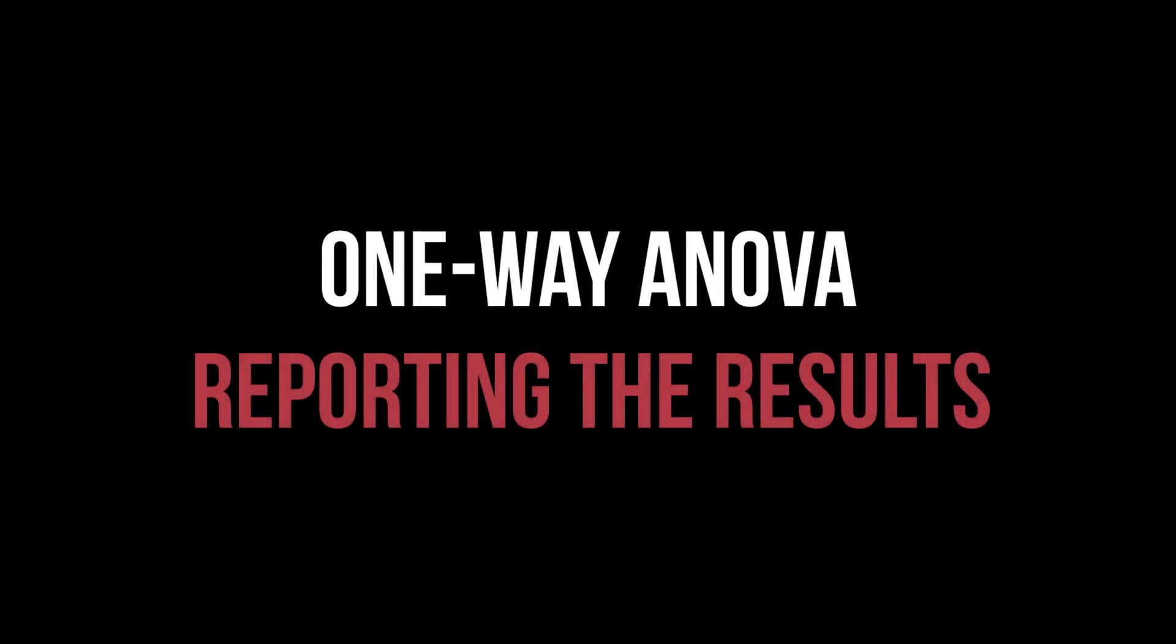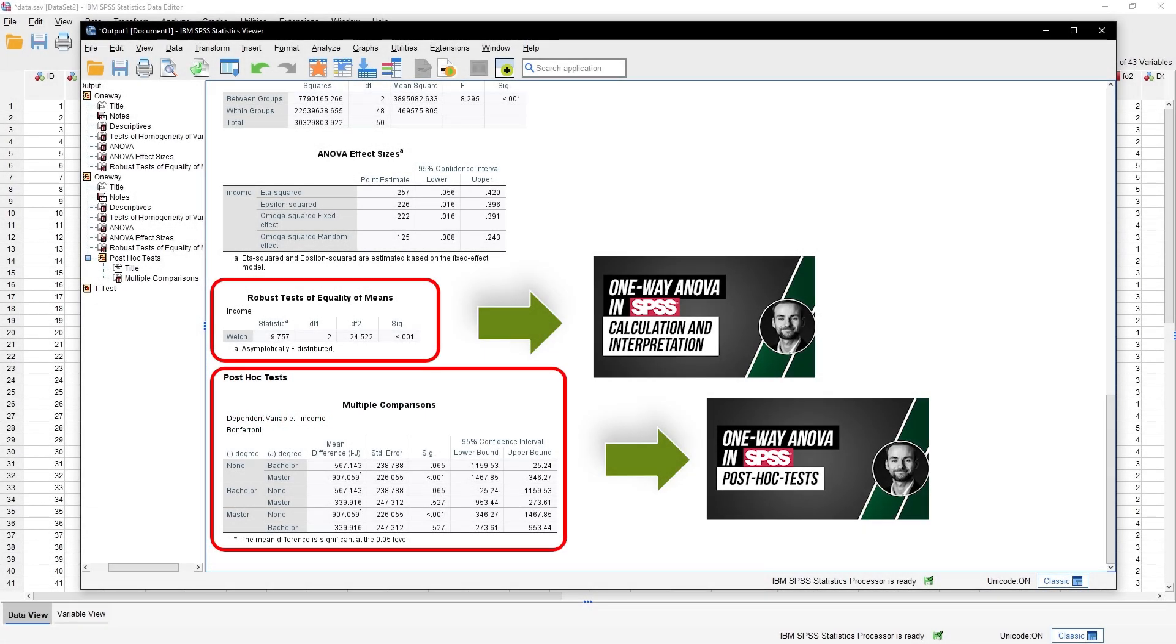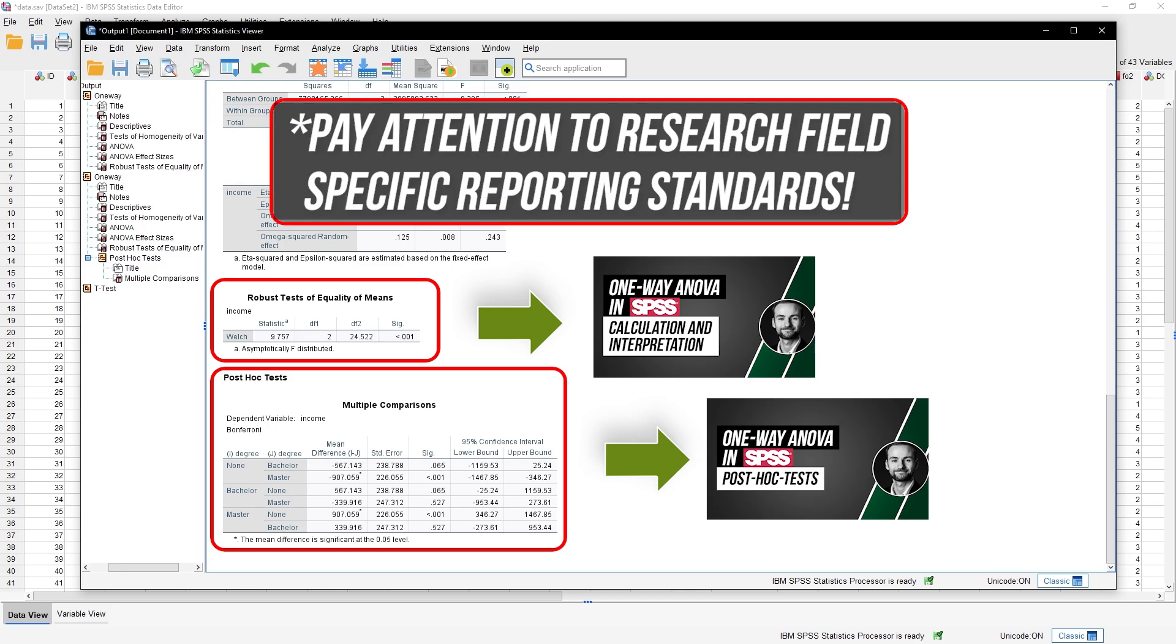The output of the one-way ANOVA in SPSS provides most of the things you need for reporting. Throughout, please always consider research field-specific reporting standards.